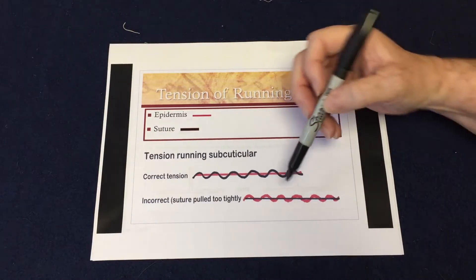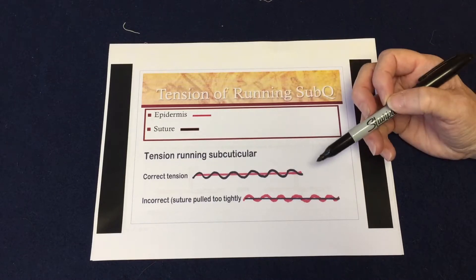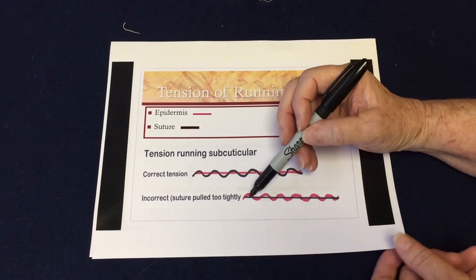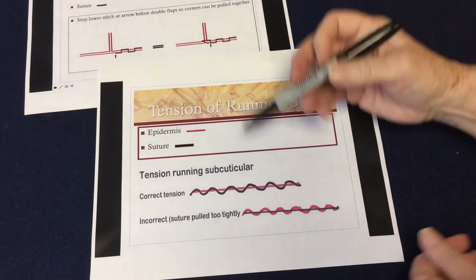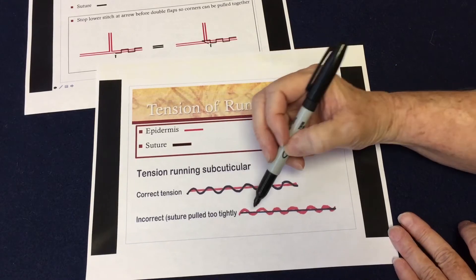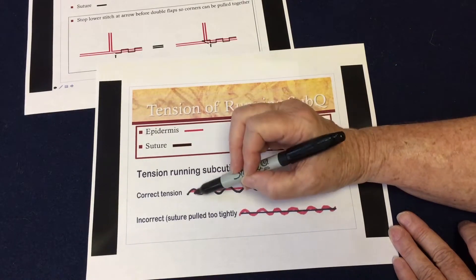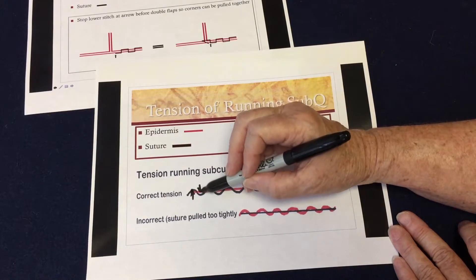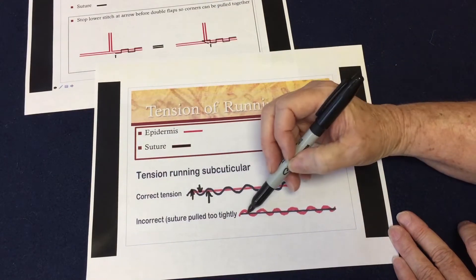So what happens if you want to pull that suture that you've just put in straight? Well, the skin is very flexible and it's going to try and accommodate you. So your suture will be straight, but your incision, if you try to pull this straight, then this part of the incision is going to move up that way. This part of the incision is going to move down trying to accommodate the straightness.